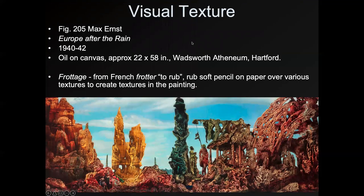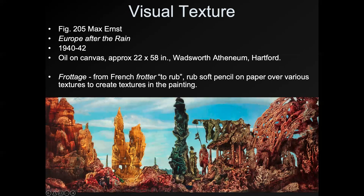Visual texture is the idea that if you imagine rubbing your hand across what is portrayed in the picture, it would have a certain feeling — but in reality it doesn't necessarily. Max Ernst's Europe After the Rain used a bunch of different techniques to get very complex visual textures. He used frottage, from the French meaning 'to rub' — you rub a soft pencil on paper over various textures, like a wall with bumps. He did this and kind of stuck them to the canvas with paint, allowing him to get very complex textures that would be difficult to paint line by line.